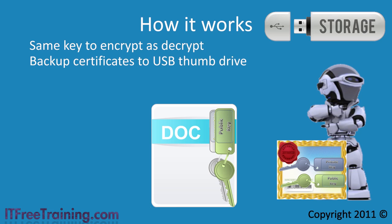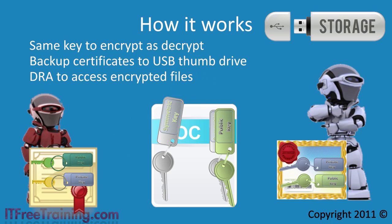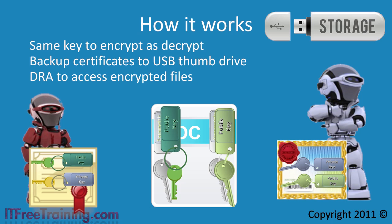The second thing you can do is create what is called a data recovery agent. A data recovery agent is a second user that has access to the file. To make this work, EFS places a second copy of the symmetric key in the file, encrypted with the data recovery agent certificate. If more users need to access the file, you can add more keys encrypted using those users' certificates.